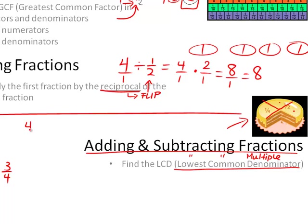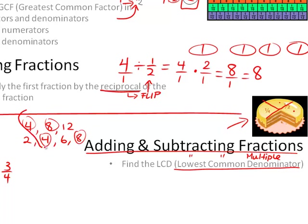For example, for 4 and 2: a multiple of 4 would be 4, 8, 12, etc. And multiples of 2 would be 2, 4, 6, 8, etc. So the common multiples are 4 and 8, but the lowest common multiple was 4.